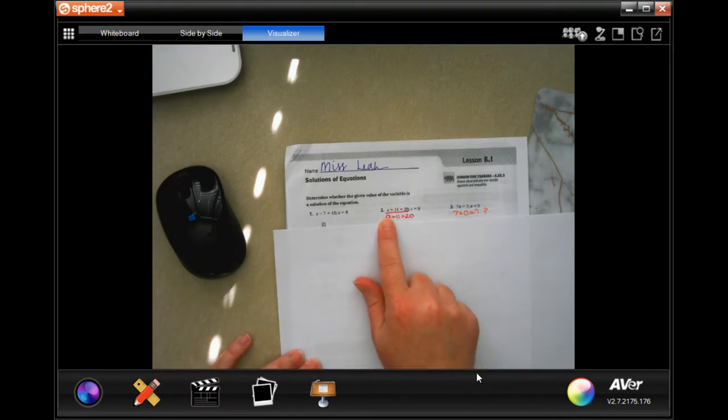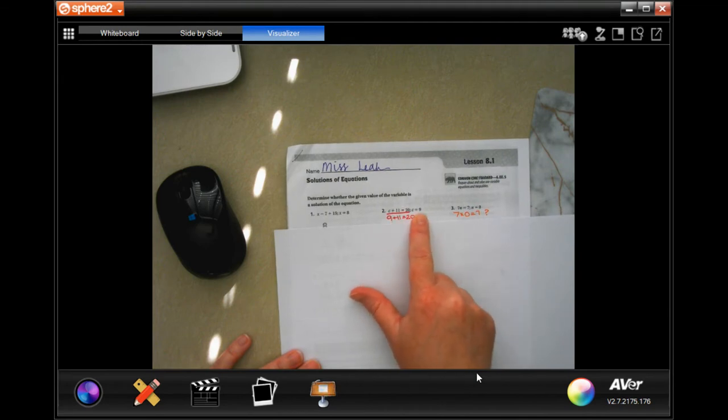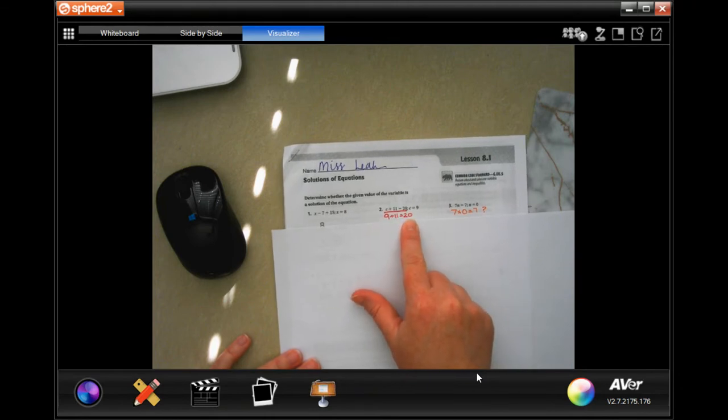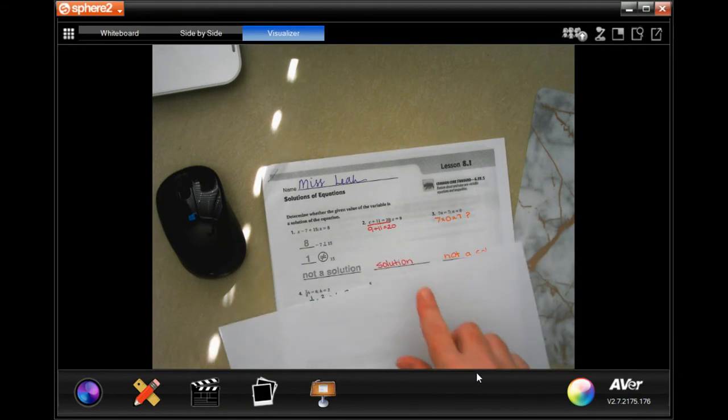It's giving you an equation and then you're going to tell them if what they've given you as a number is correct. In this case they told you that C is equal to 9. So where you see C you're going to plug in 9. So 9 plus 11 is 20. Yes, that's true which makes it a solution.